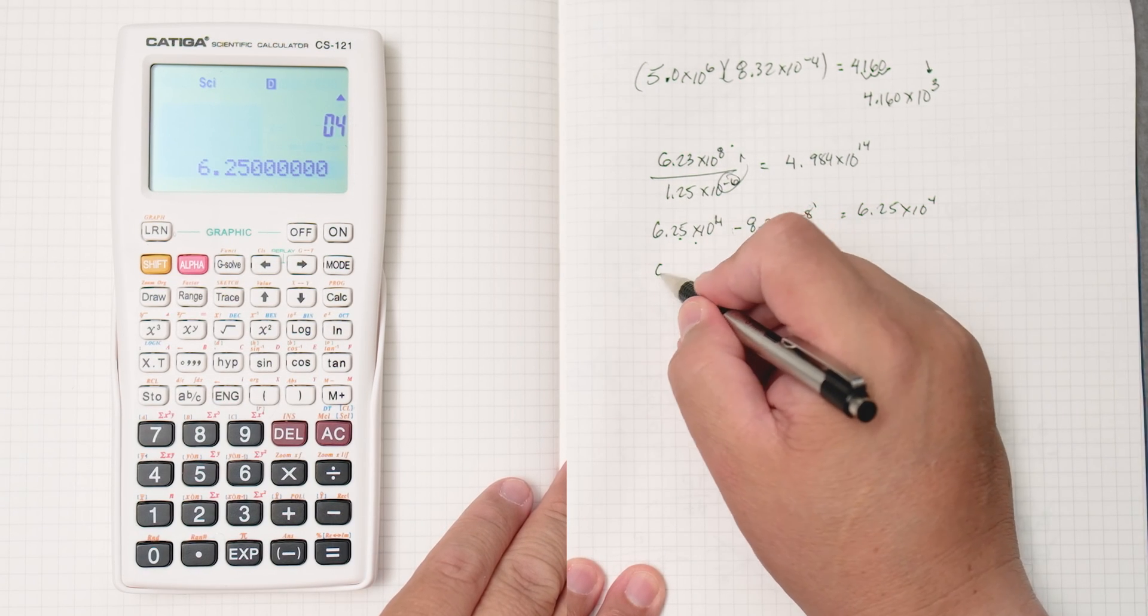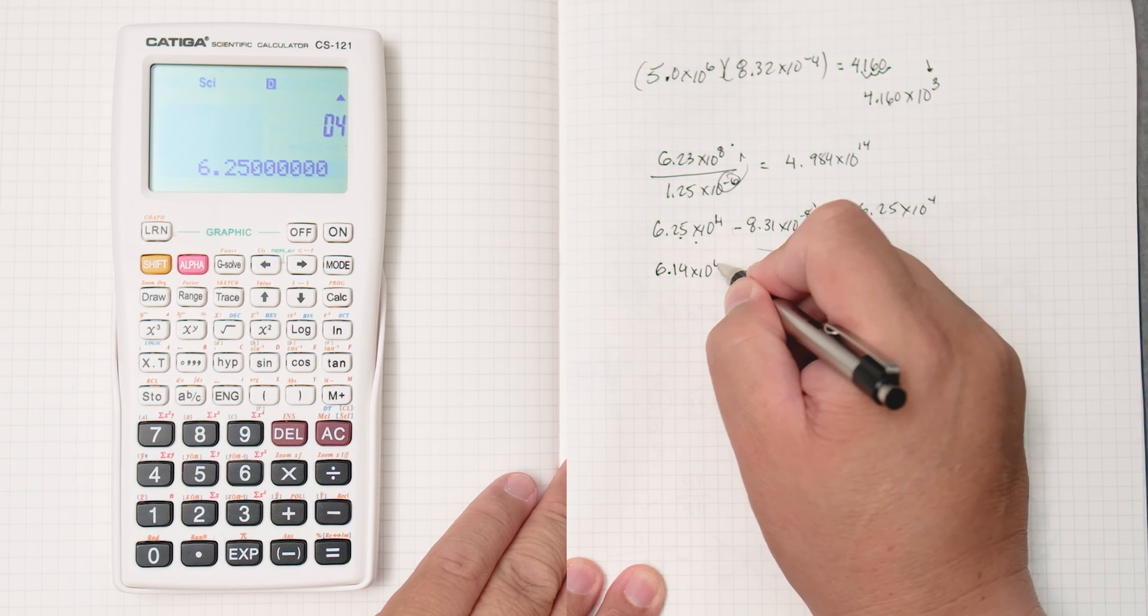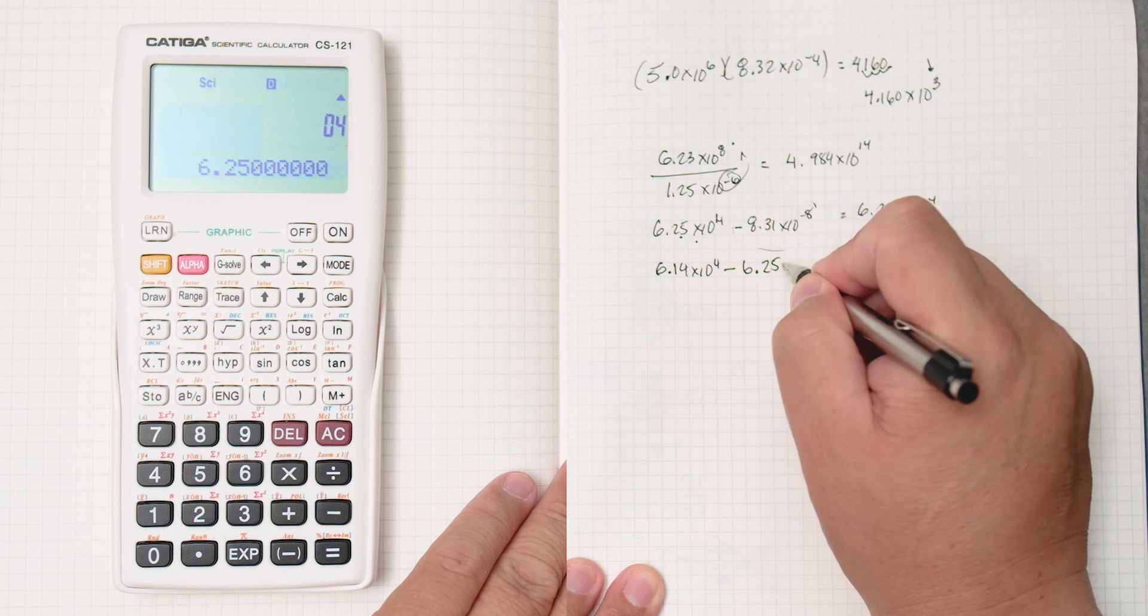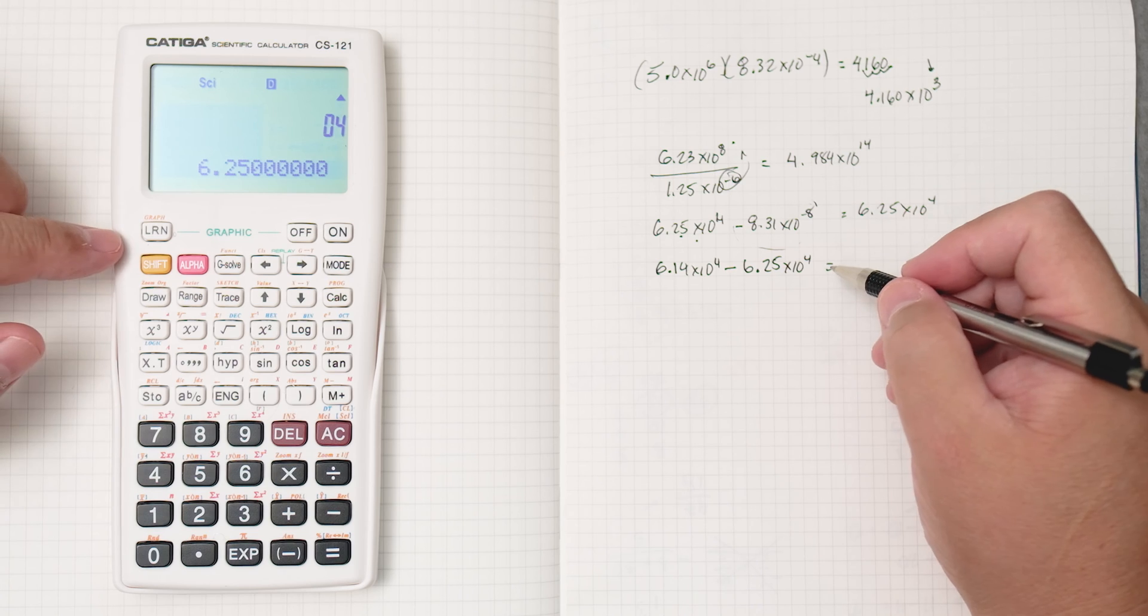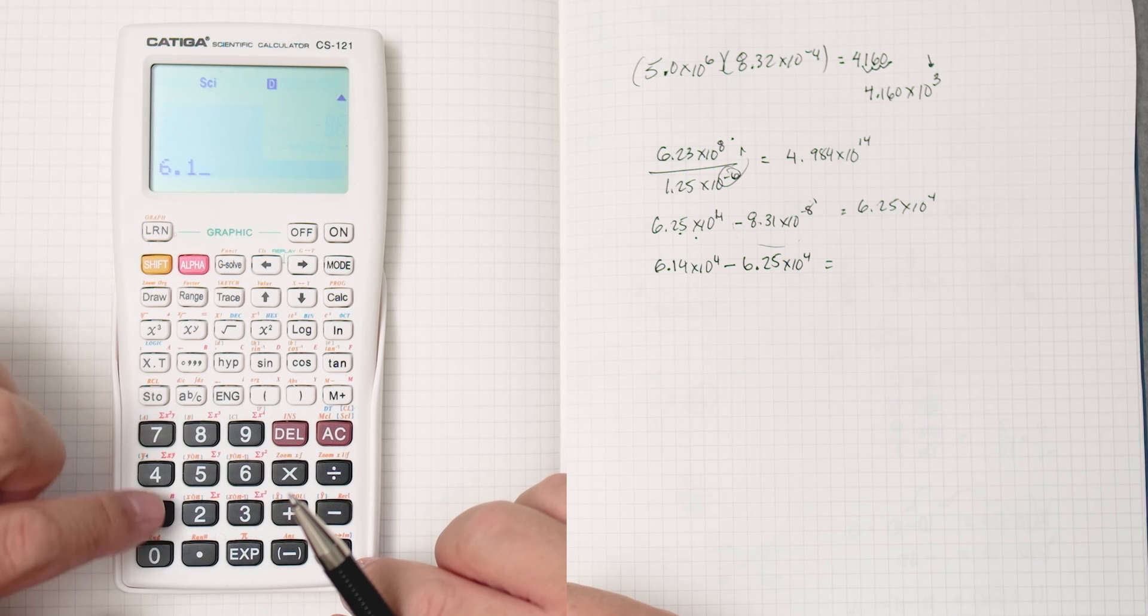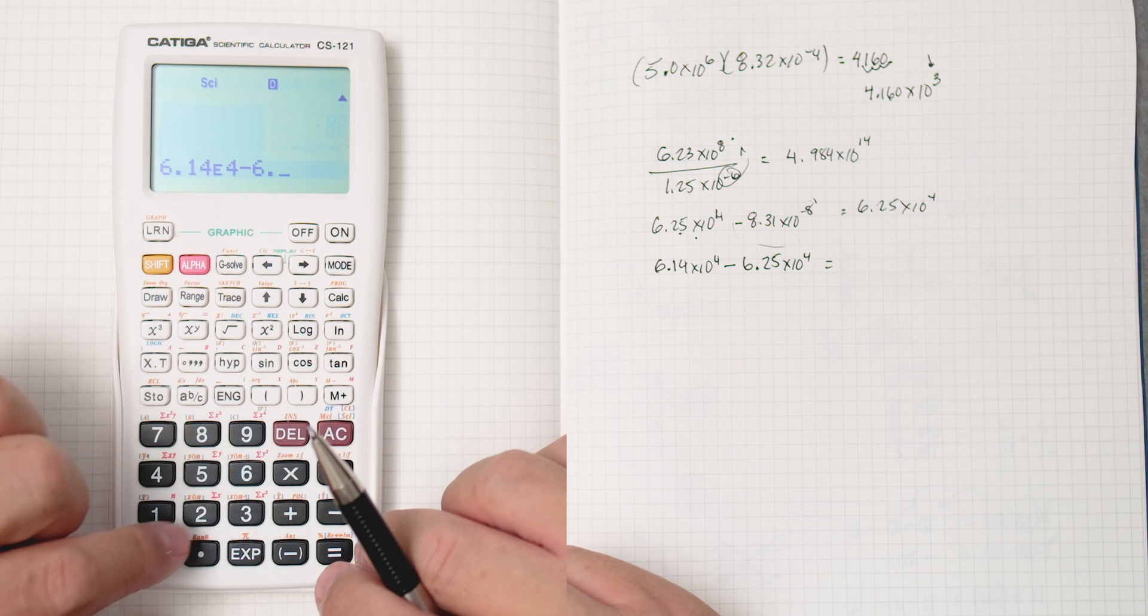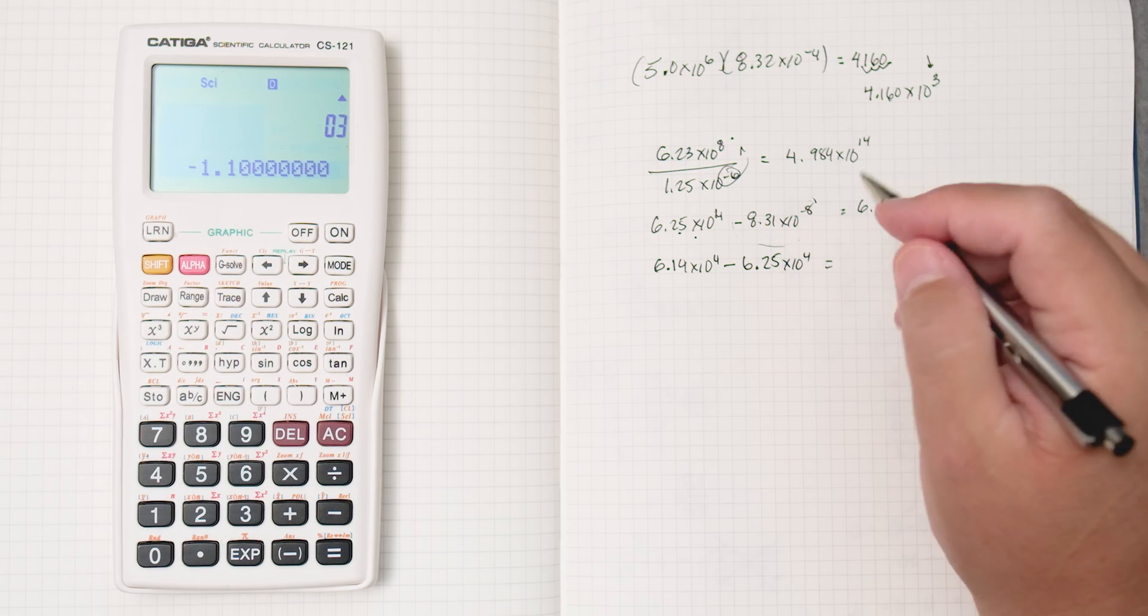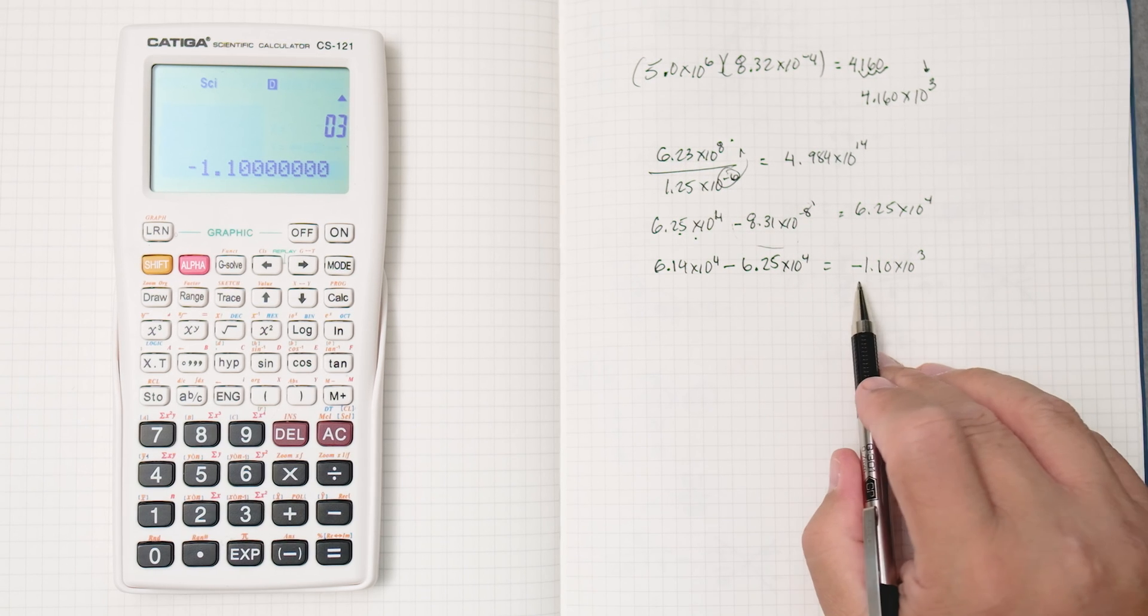Let's do another one that doesn't do that at all. 6.14 times 10 to the 4th minus, let's say, 6.25 times 10 to the 4th. This will be much better. You can see that it will do the math a little bit different. 6.14 times 10 to the 4th, take away 6.25 to the power of 4 equals, and then we get negative 1.10 times 10 to the 3rd.